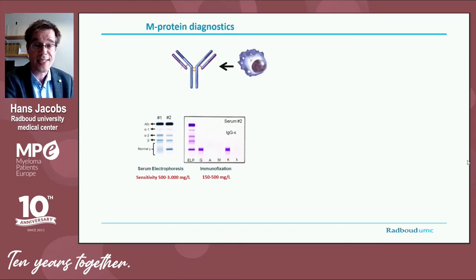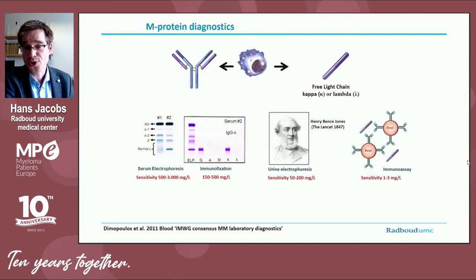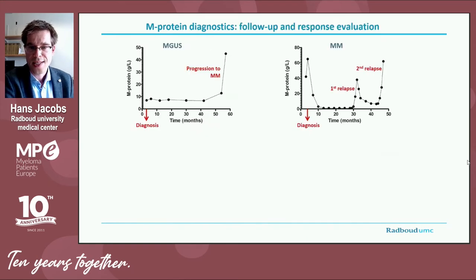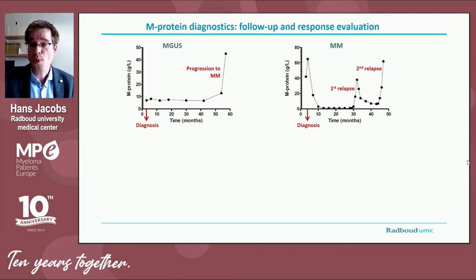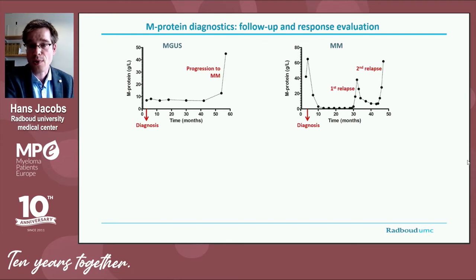This so-called M protein can be detected in the blood using electrophoretic techniques. The M protein can be detected, characterized, and quantified. In case the patient produces only monoclonal light chains, the M protein can be monitored either in the urine or with nephelometric techniques in the blood. M protein diagnostics is performed to screen for and diagnose monoclonal comorbidities, but more importantly to monitor disease activity — for example, in an MGUS patient to monitor progression towards multiple myeloma, and in myeloma patients to monitor therapy responses.